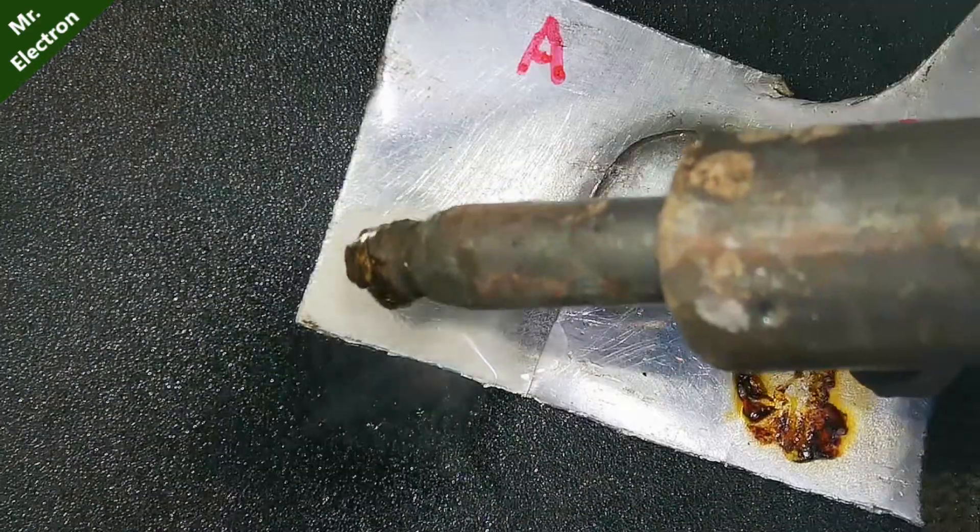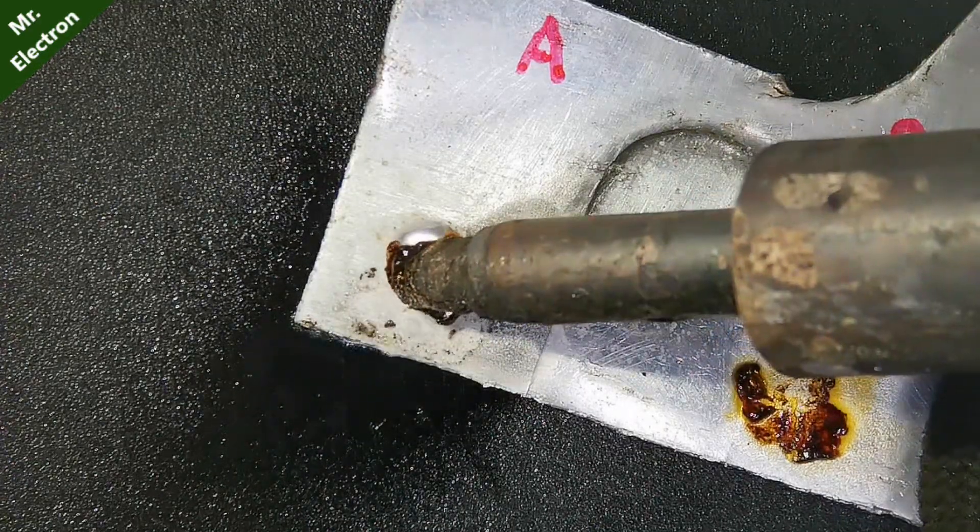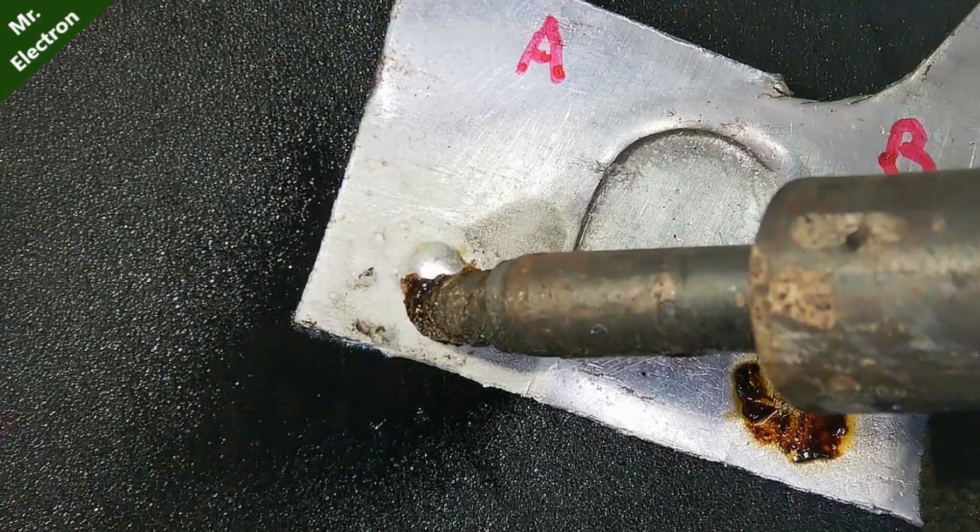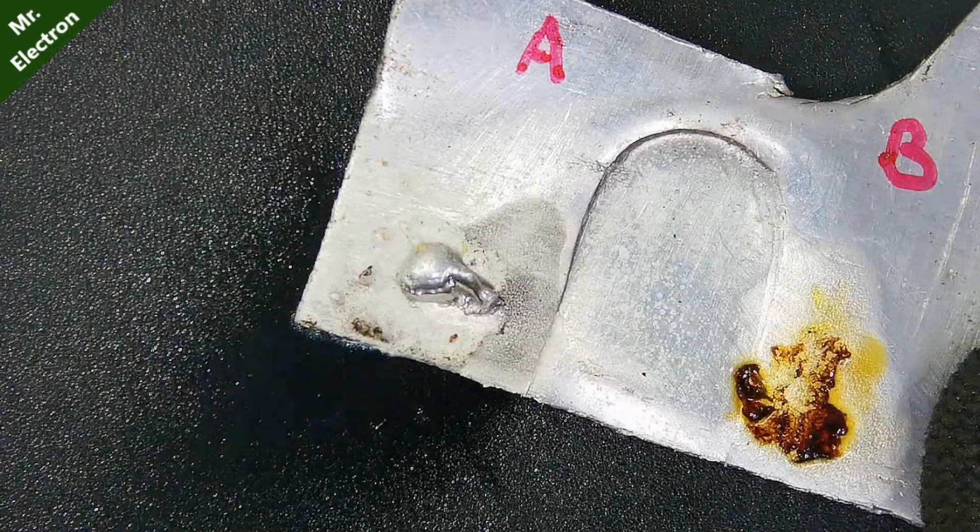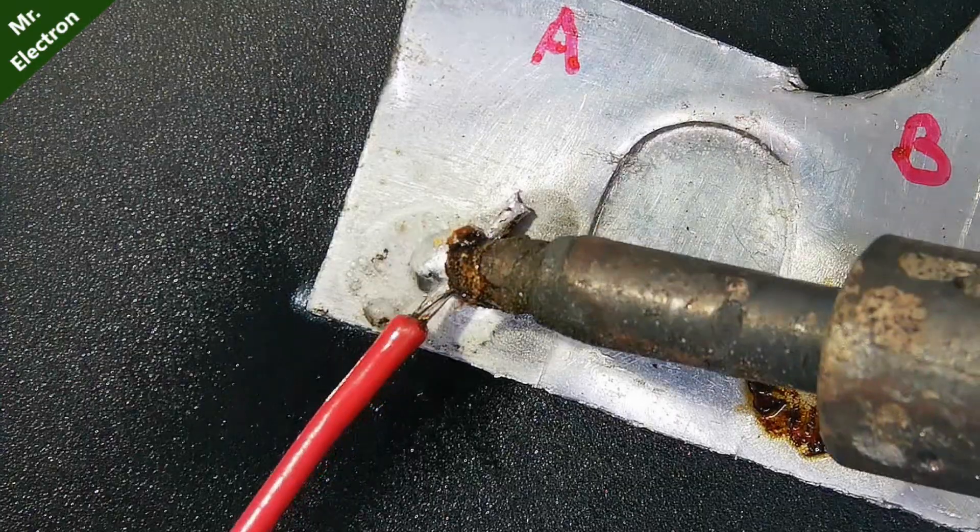After that, take your hot soldering iron and put some solder on area A, exactly as shown. And once the solder is stuck, bring your red wire and solder it to point A.